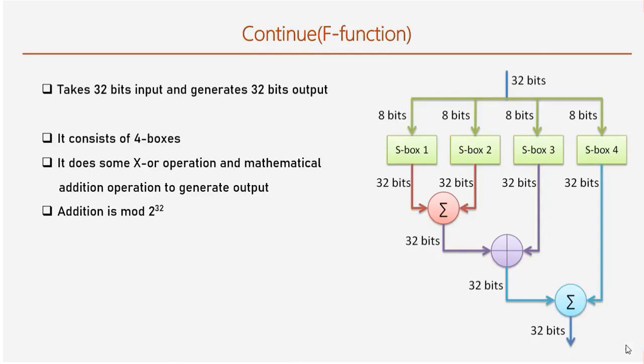F-function. The F-function takes 32-bit input and also generates 32-bit output. First of all, it takes 32-bit output from S-box 1 and 2 and does addition operation which generates 32-bit output which is next XORed with the output of S-box 3. And again generates 32-bit output. Finally, it does addition of 32-bit output with the output of S-box 4. This is the final output from F-function. Here is the simple equation that is operated by F-function. To be noted that here addition is mod of 2 to the power 32.